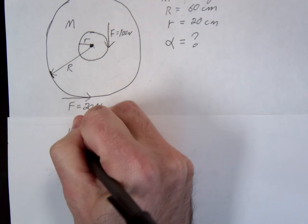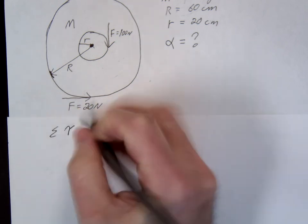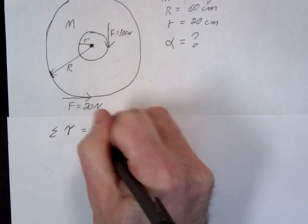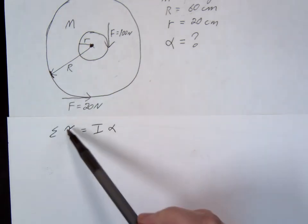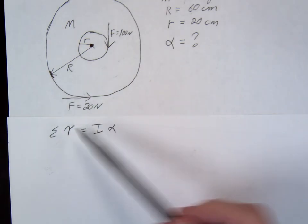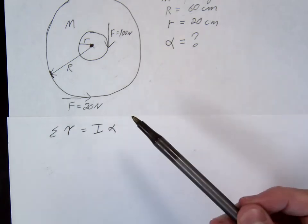The main equation is sum of torques equals I alpha. This is essentially F equals MA for rotational motion, where torque is the rotational force, I is rotational inertia, and alpha is rotational acceleration.